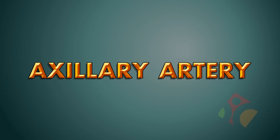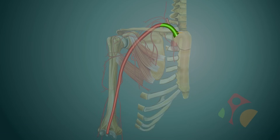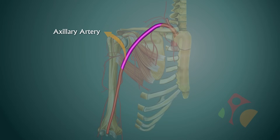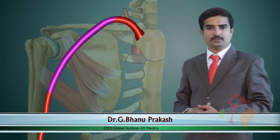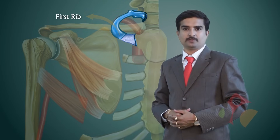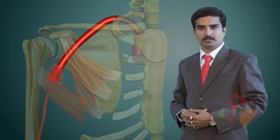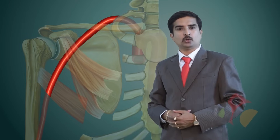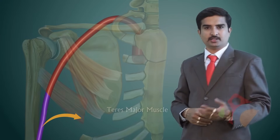In today's class of gross anatomy, after the completion of the arteries of the upper limb, that is the subclavian artery, we are into the next artery called the axillary artery. The axillary artery is the main artery of the upper limb. It begins from the outer border of the first rib as the continuation of the subclavian artery and ends at the lower border of the teres major muscle, where it continues as the brachial artery.